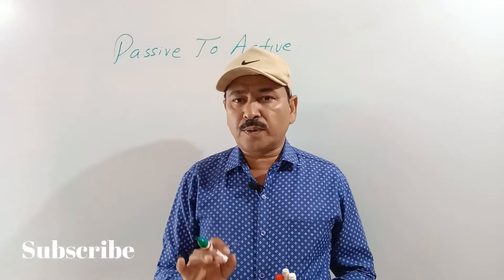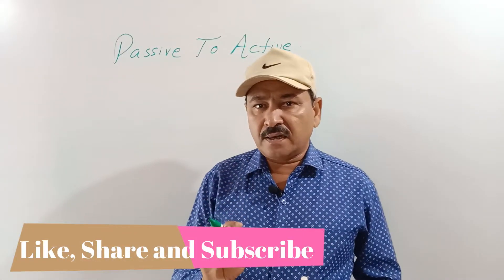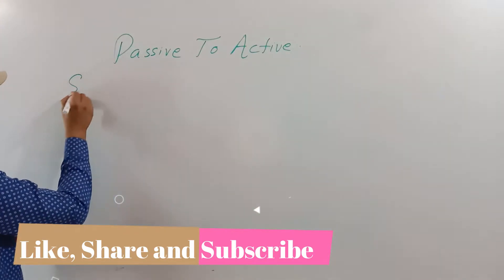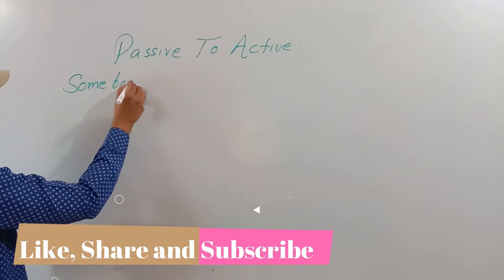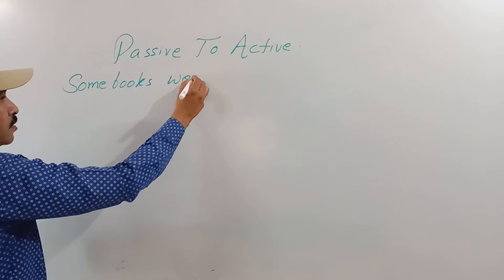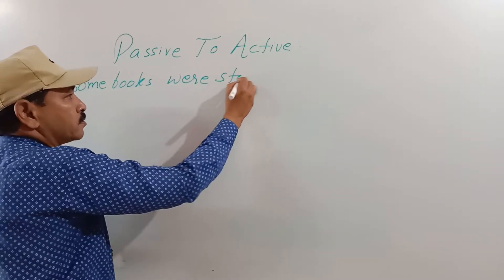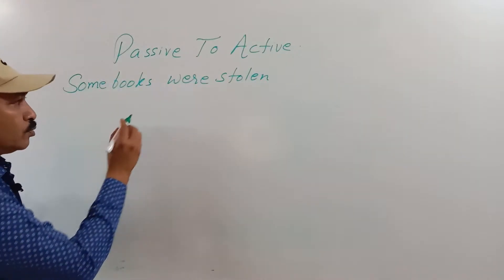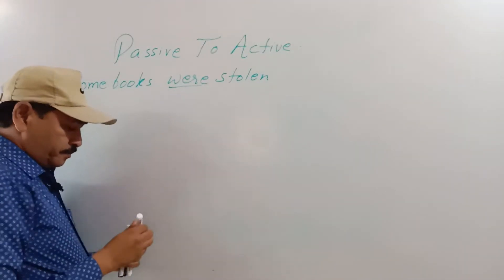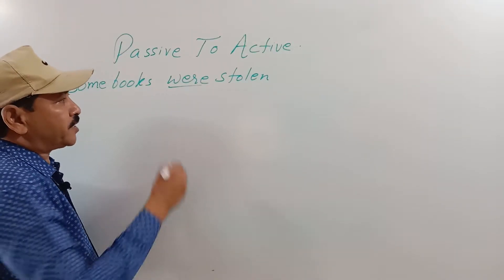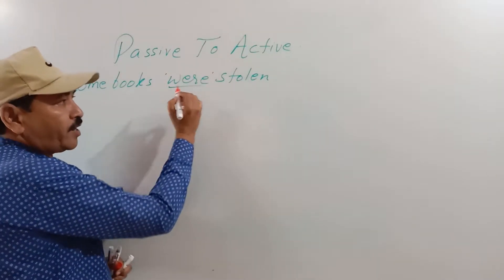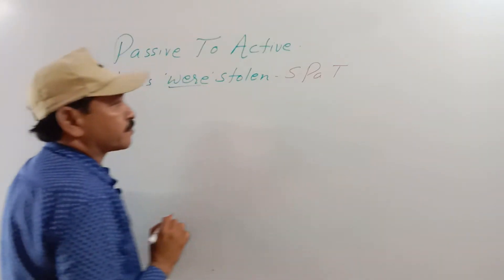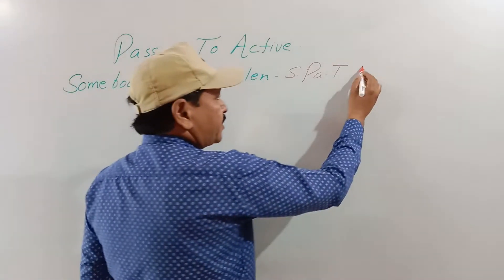Simple present tense का example बहुत आसान था। अब एक दूसरा example देखेंगे: 'some books were stolen.' यहाँ पर 'were' — आपको सबसे पहले यही hint मिलनी चाहिए — 'were' है, इसका मतलब ये sentence simple past tense में है। और यह sentence passive voice में है।